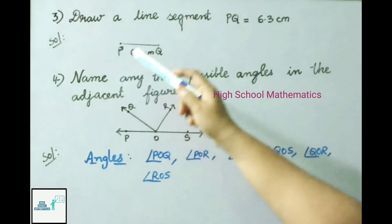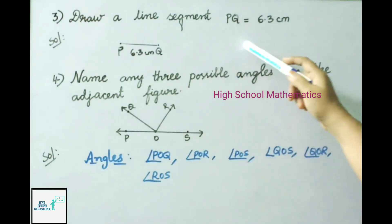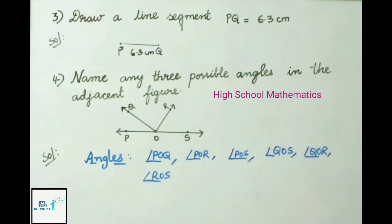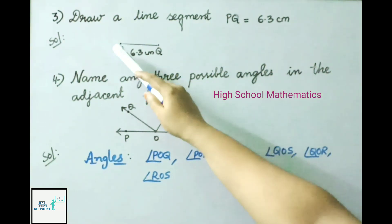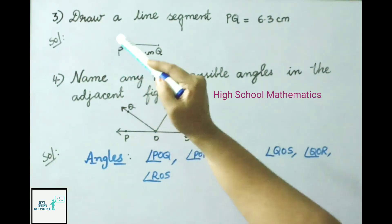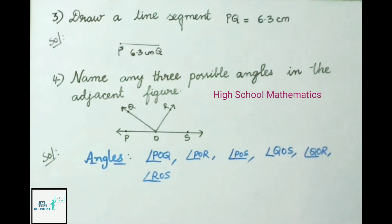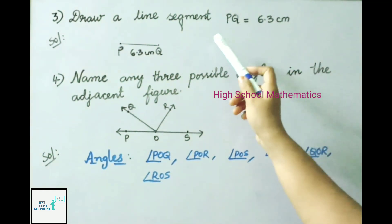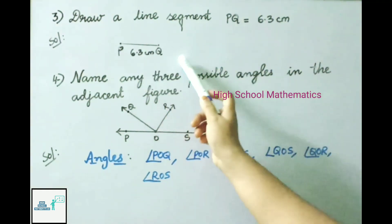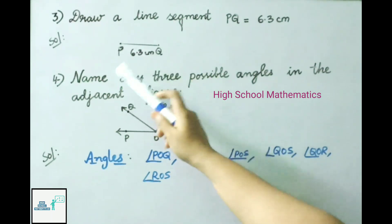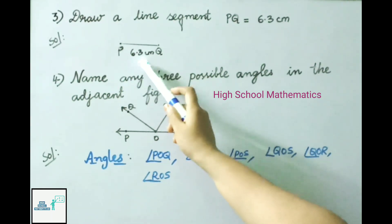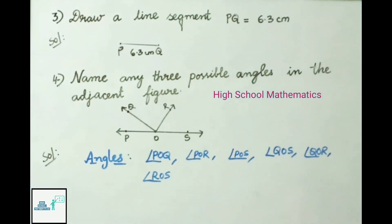Question 3: Draw a line segment PQ equal to 6.3 cm. Take a ruler, keep zero at one point, mark another point at 6.3 cm, join them, and name them as PQ. So PQ equals 6.3 cm.